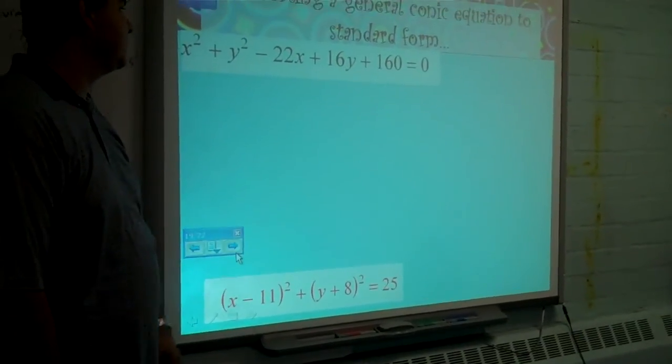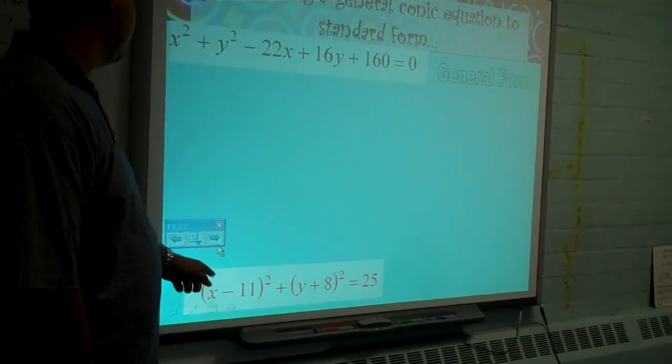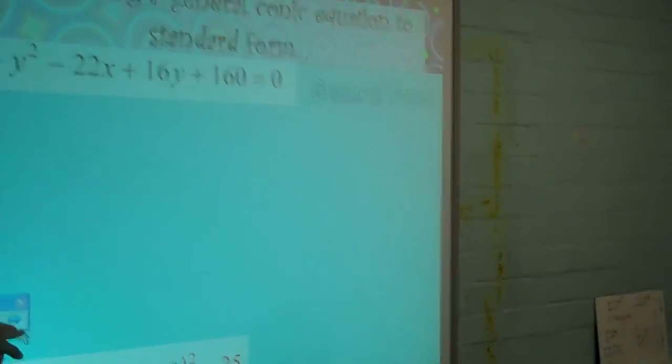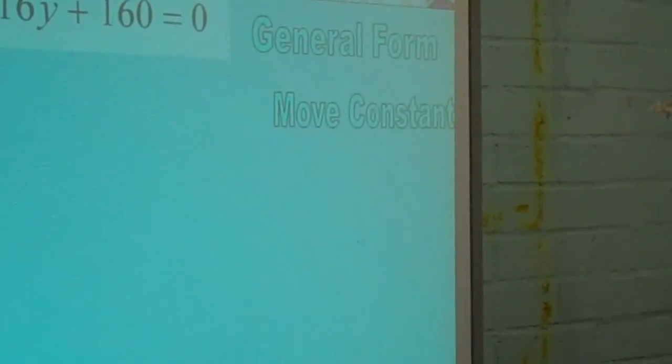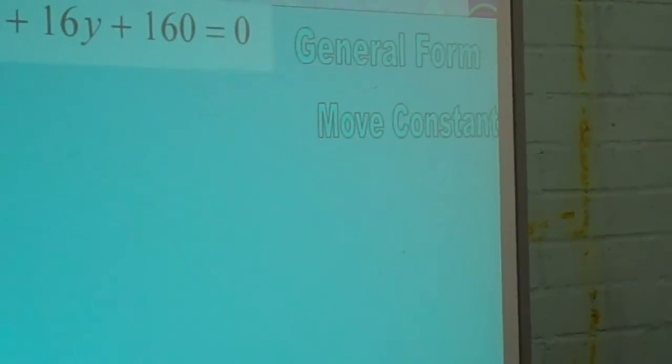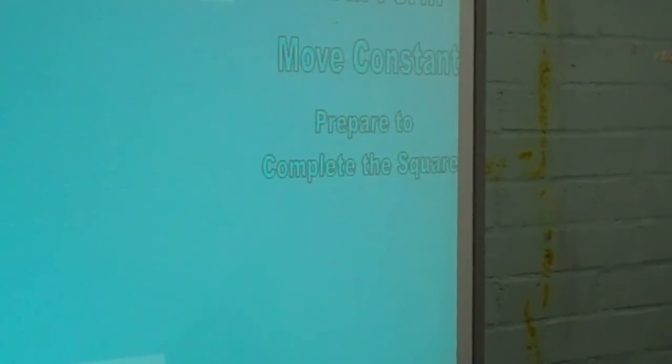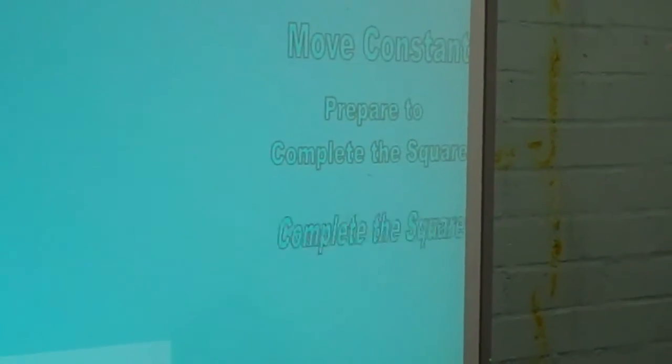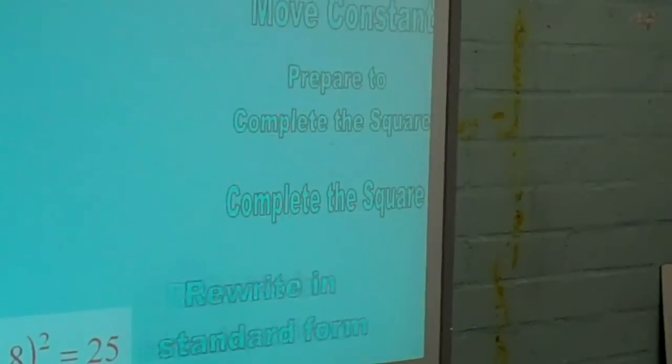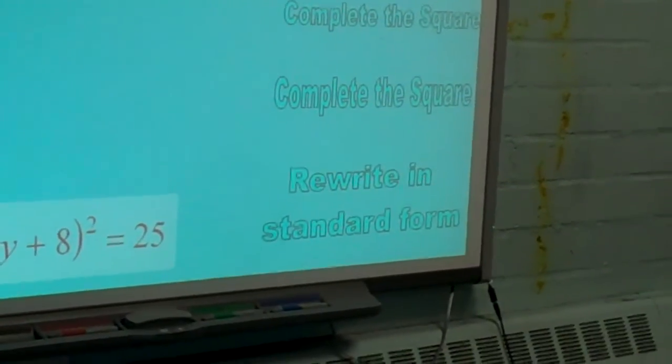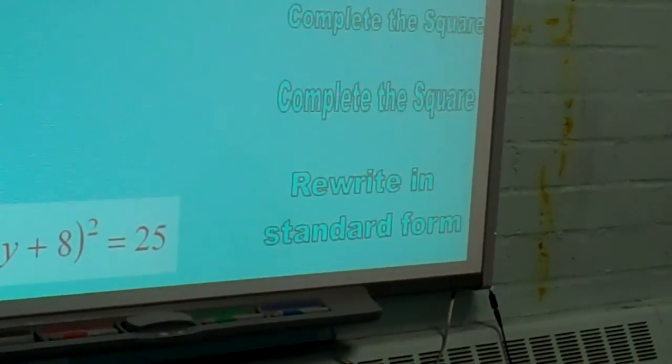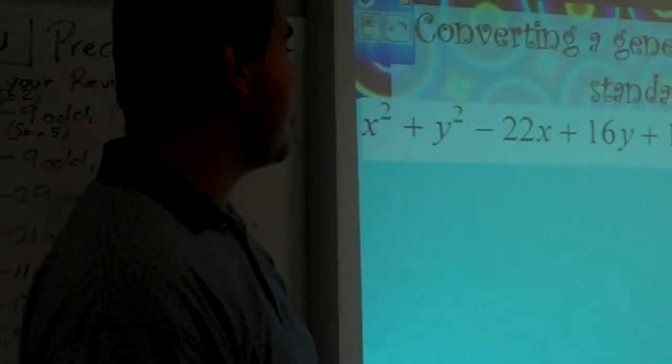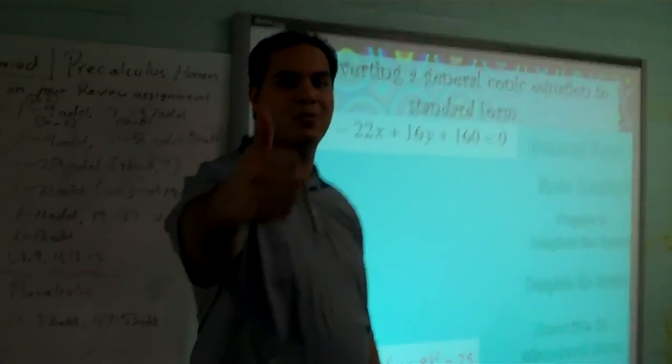Your steps that you're going to follow are general form. Make sure that you know that that's the general form. Move the constant over. Prepare to complete the square. Complete the square. And finally, write it in standard form. Okay? I think that'll be it. So once we've converted, we are done. Thank you.